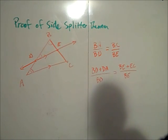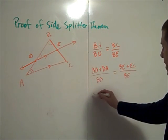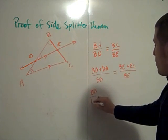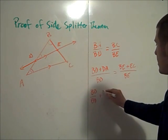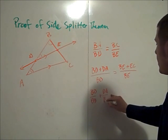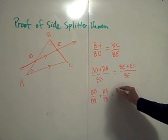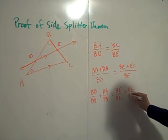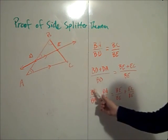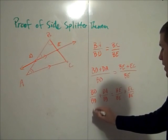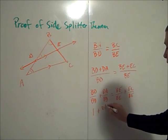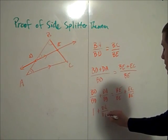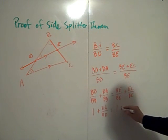Now just split it up. So we have BD over BD plus DA over BD is equal to BE over BE plus EC over BE. But BD over BD is just 1. So I have 1 plus DA over BD is equal to 1 plus EC over BE.